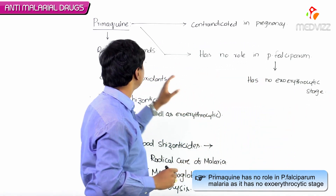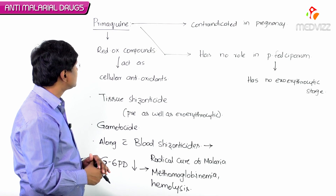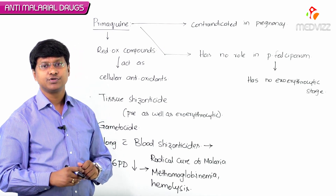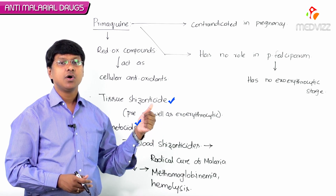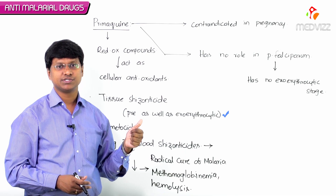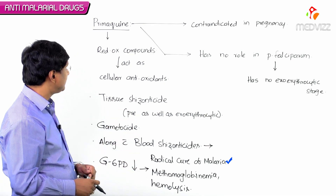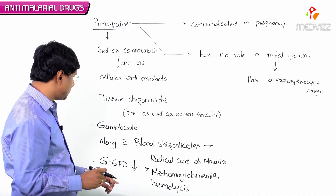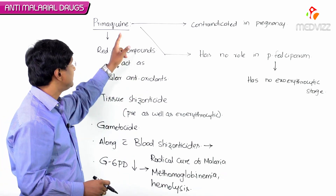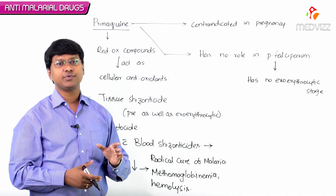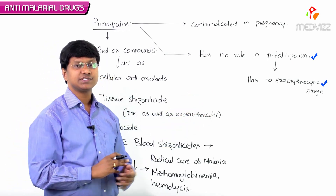To briefly revise: primaquine forms redox compounds which act as cellular antioxidants. It is both a tissue schizonticide and gametocide, acting on pre and exo-erythrocytic stages. It is always used with blood schizonticides for radical cure of malaria. In G6PD deficiency it causes methemoglobinemia and hemolysis. It is contraindicated in pregnancy and has no role in plasmodium falciparum malaria because this organism has no exo-erythrocytic stage.